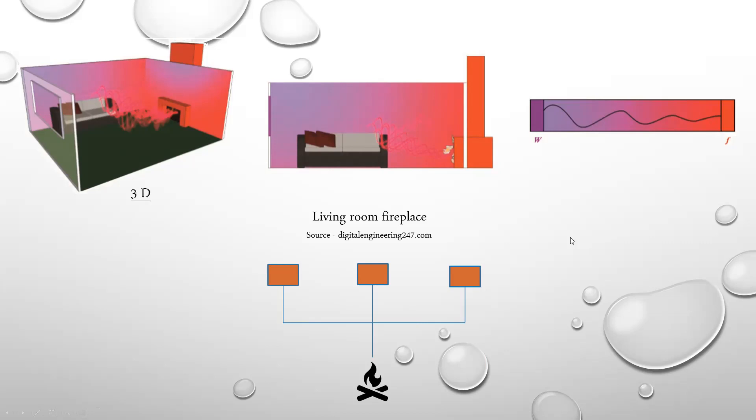Now you may ask, what is a zero-dimensional simulation? How can we have zero dimensions? Well, the answer is that here we do not consider the length, width, or the height of the space. Instead, we assume an average value for the entire room. So instead of calculating the temperature at different points in the room, we just calculate an average temperature for the entire room.